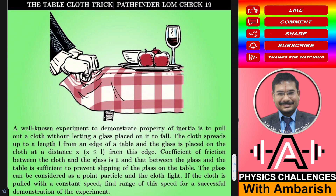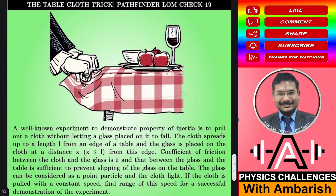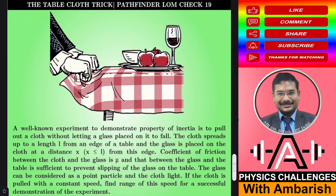What's happening here is that there's a glass kept on the table. Let's say this distance is x and the total distance to the edge of the cloth is L. To demonstrate the trick, this cloth is pulled quickly enough so that the cloth comes out and the glass stays on the table. We have to find the range of speed required for a successful demonstration.